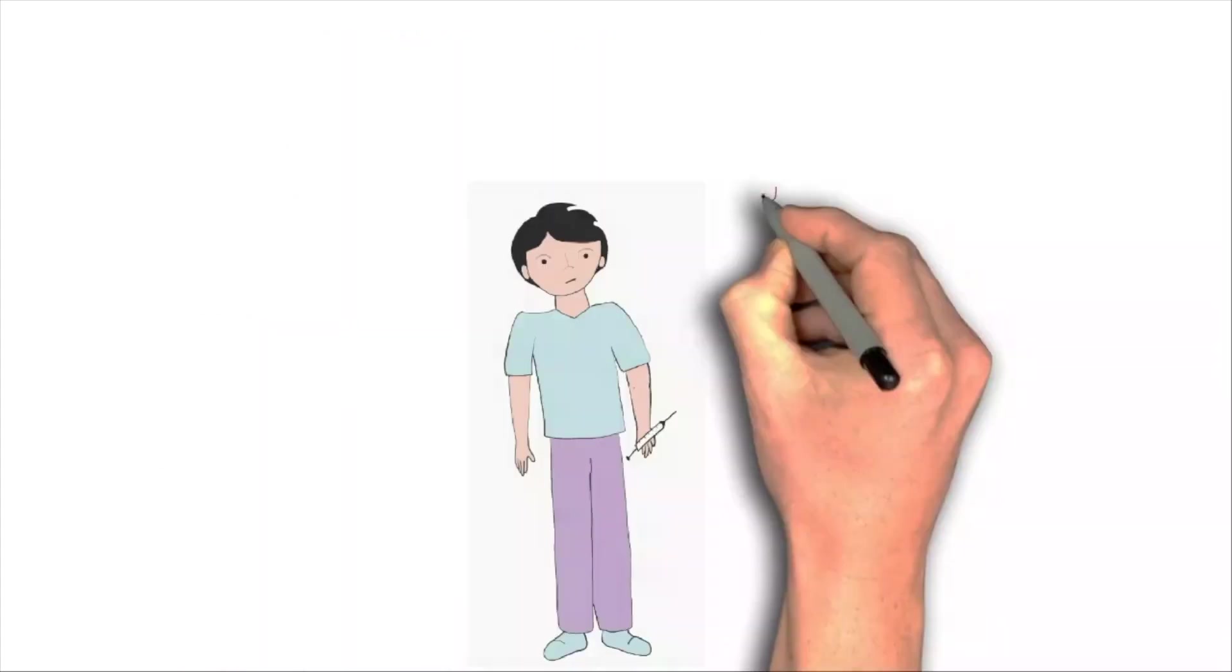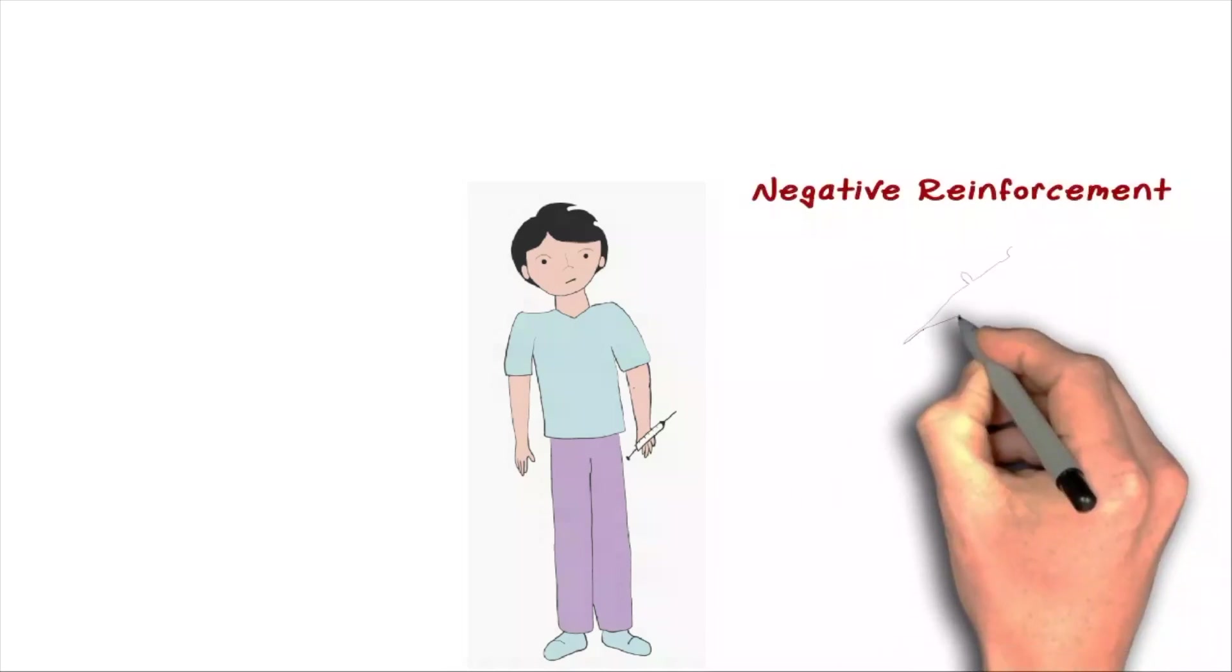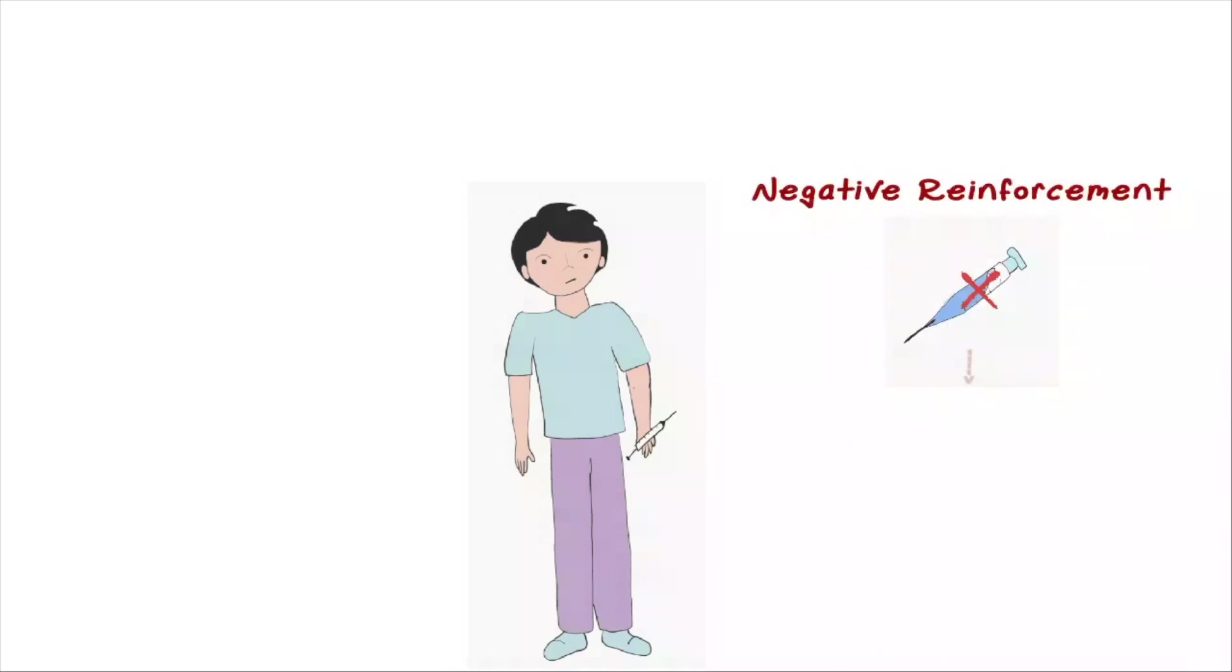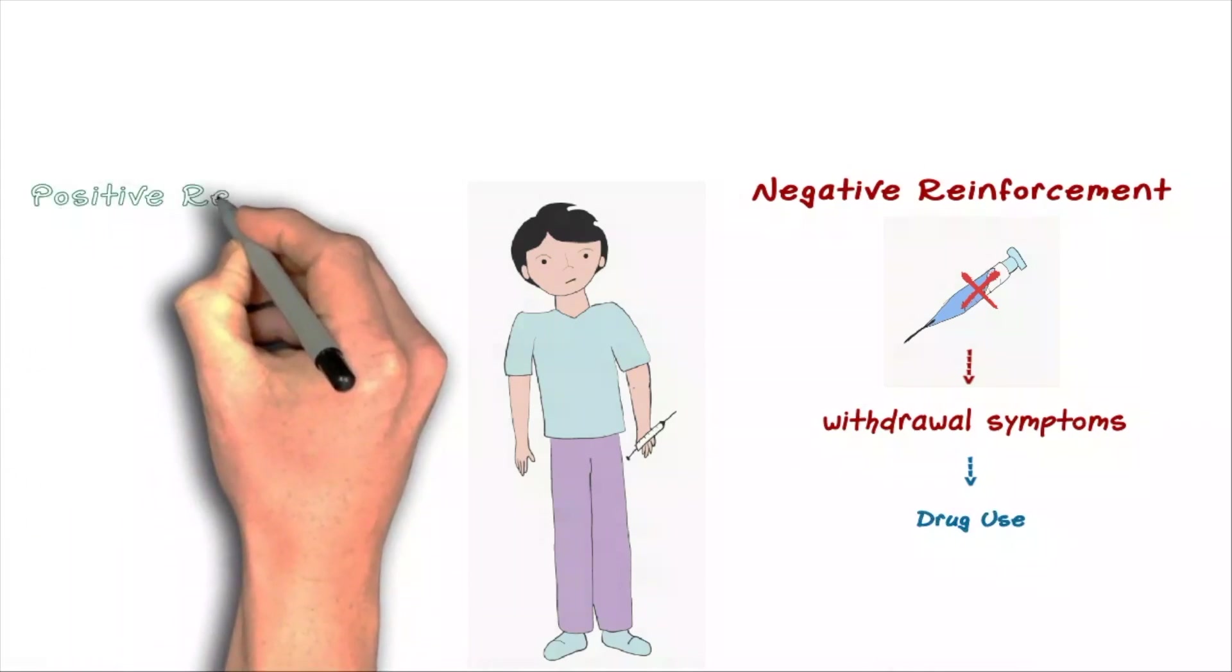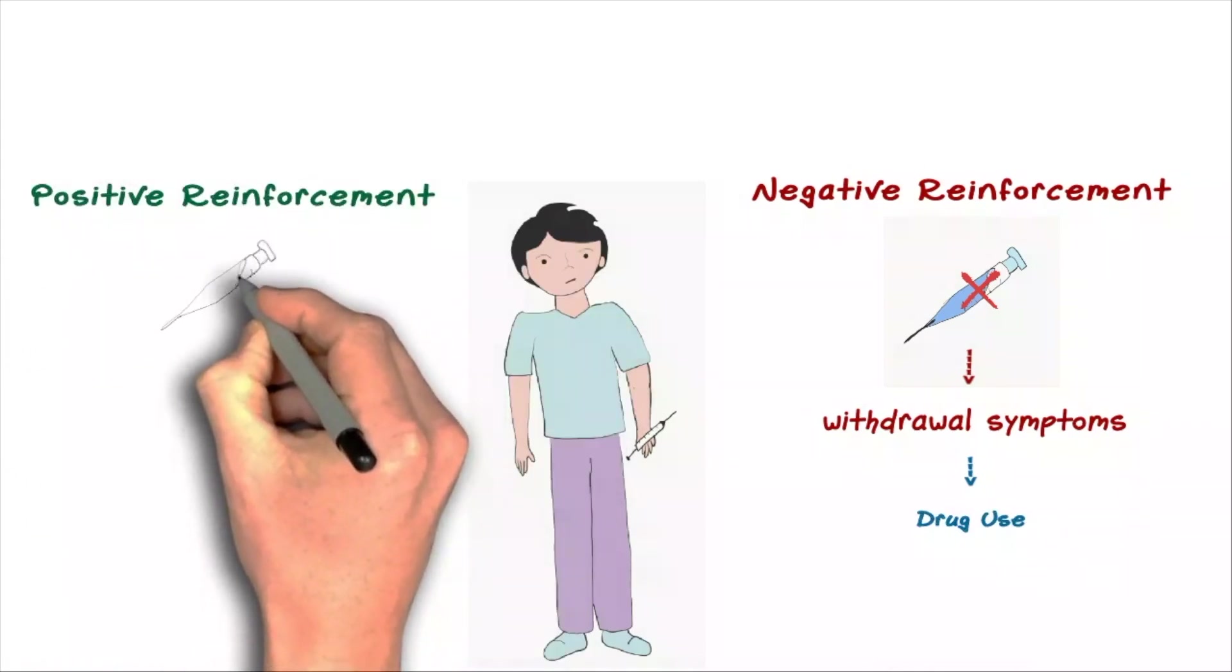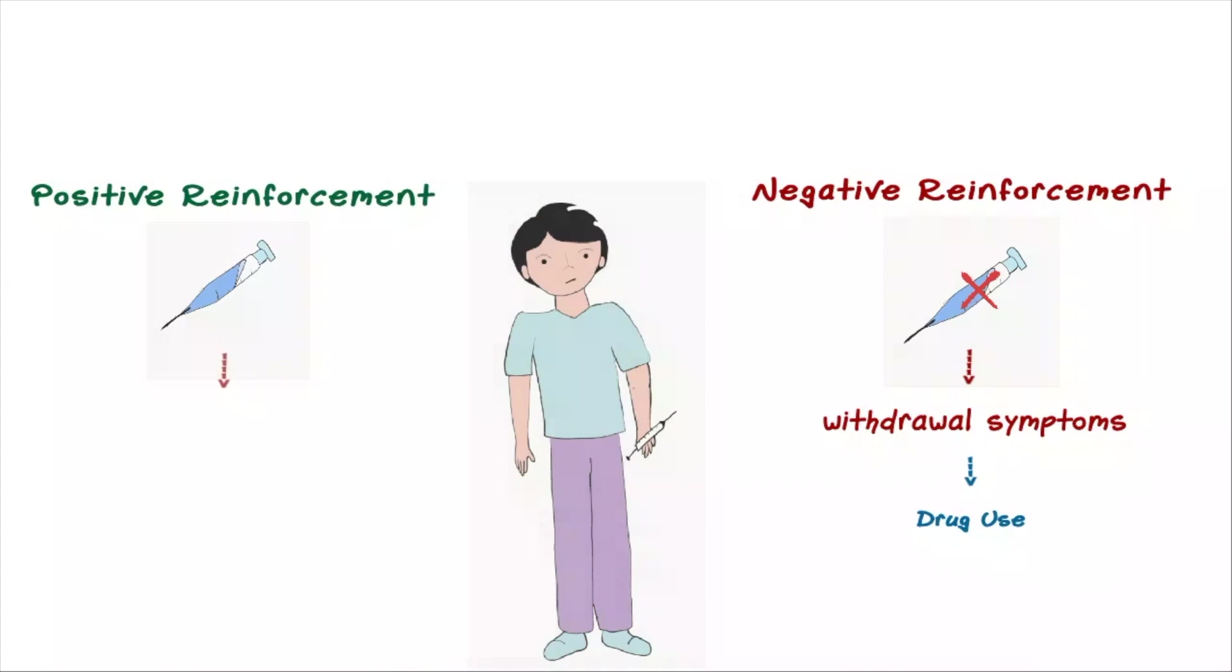These symptoms can feel really awful and often prompts people to use opioids again. A process called negative reinforcement, since you are removing the drug, which causes withdrawal symptoms, which reinforces more drug use to avoid these symptoms. There is also positive reinforcement from the dopamine-induced euphoria, again leading to more drug use. Together, this positive and negative reinforcement leads to opioid addiction, also known as opioid use disorder.